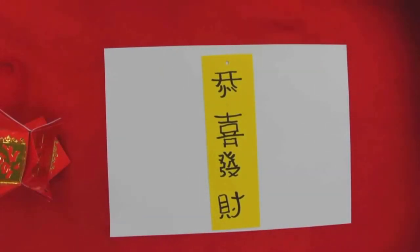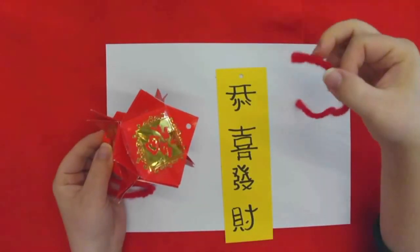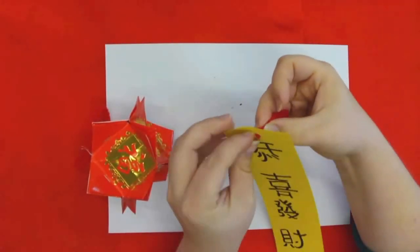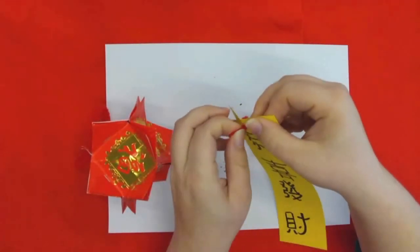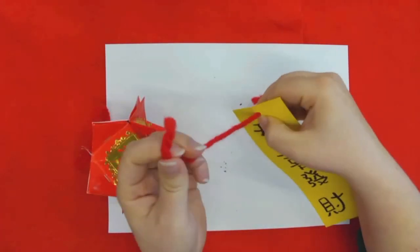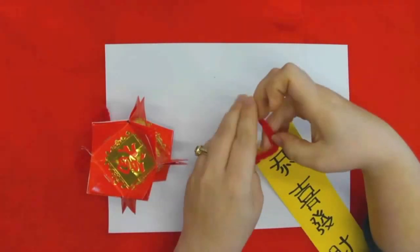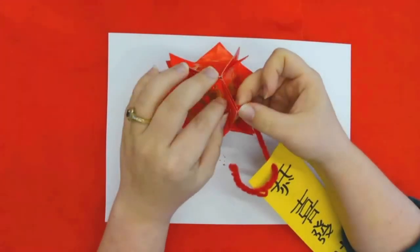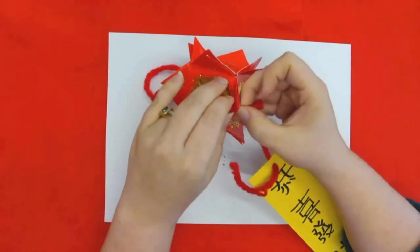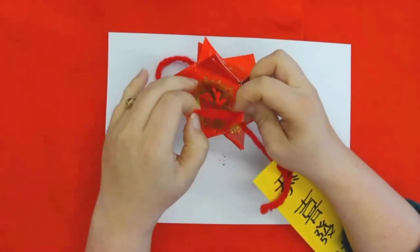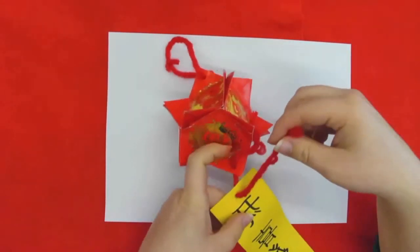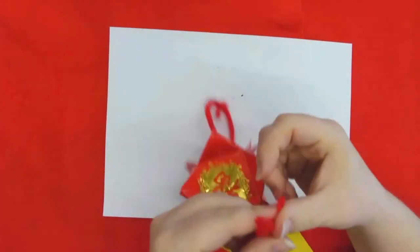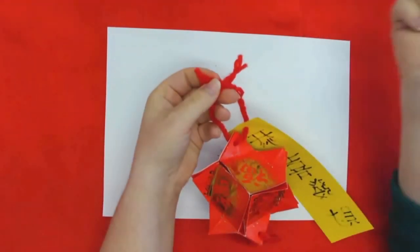And there you go, so that wasn't too hard was it? So now we're going to take our second piece of string. And first I'm going to put it through the paper, I found that was easier. There you go, and now I'm going to put it through the hole in the lantern and tie those two pieces together.